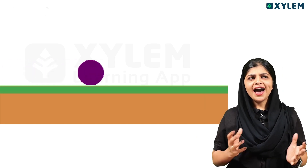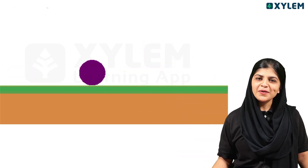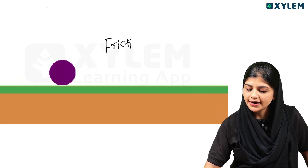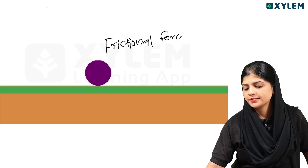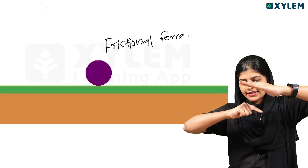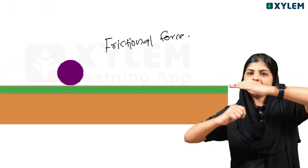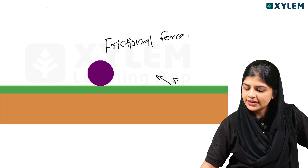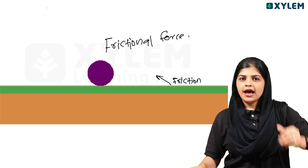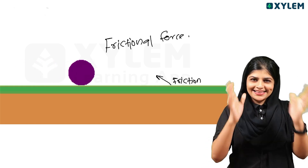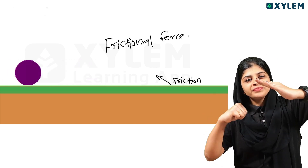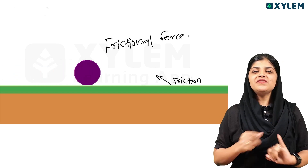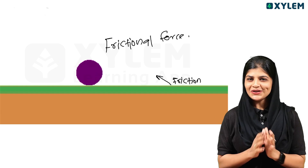There is also frictional force. When an object moves along the ground, a force acts against the motion. That opposing force is frictional force. So, frictional force is an example of contact force. Contact force is clear — whenever you directly touch an object and apply force, that is contact force.